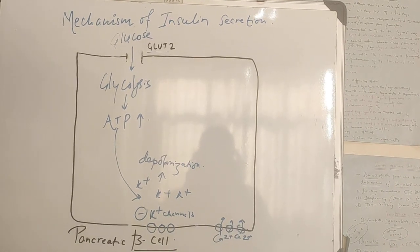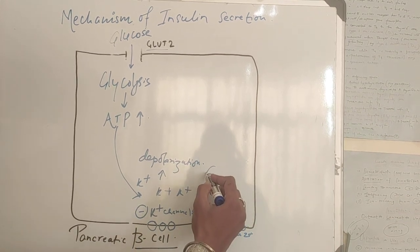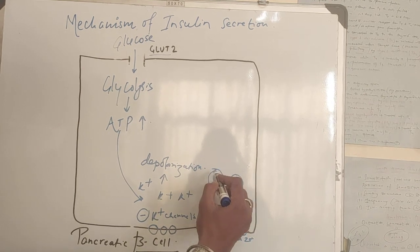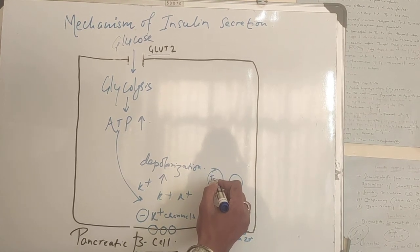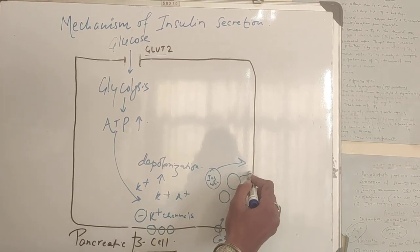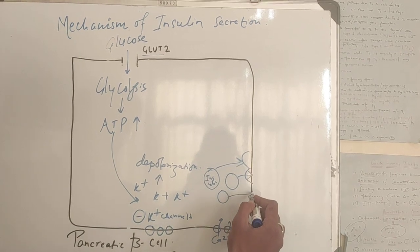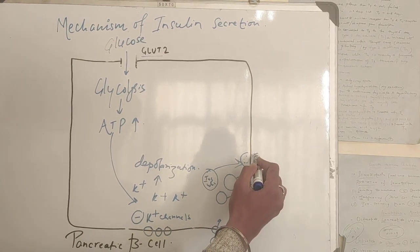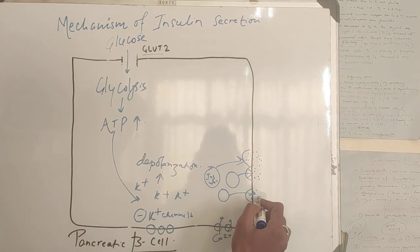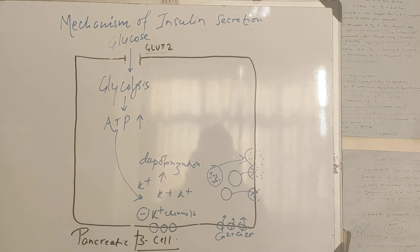After calcium entry, it is responsible for fusion of insulin vesicles into the cell membrane and their release via exocytosis. In this way, insulin is secreted from the pancreatic beta cell.